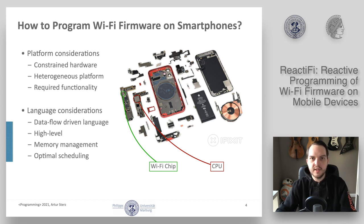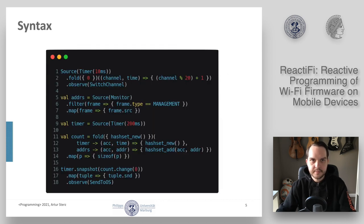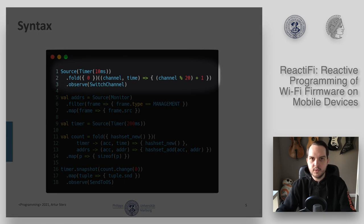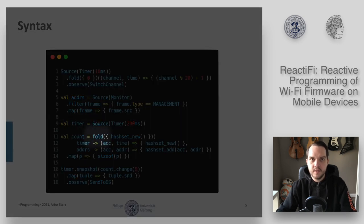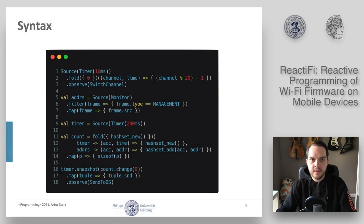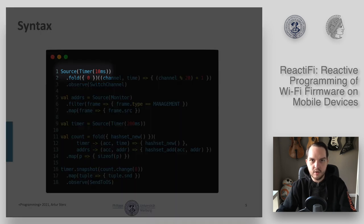To achieve these goals, a domain-specific language is necessary. It should be data flow driven since networking is data and event driven by nature, and it should abstract from the platform so that non-expert developers can use it. A ReactiFi program consists of a sequence of definitions denoted with a dot syntax. Each sequence is called a reactive, and every reactive can be assigned to a variable using the val keyword. ReactiFi supports three basic functions: filter, map, and fold. The functionality within these functions is implemented in a simplified version of C to abstract from the platform. To interact with the Wi-Fi firmware, sources and observes can be used. Sources define event triggers like incoming frames or timers, and observes trigger actions in the firmware like sending a frame or switching the Wi-Fi channel.